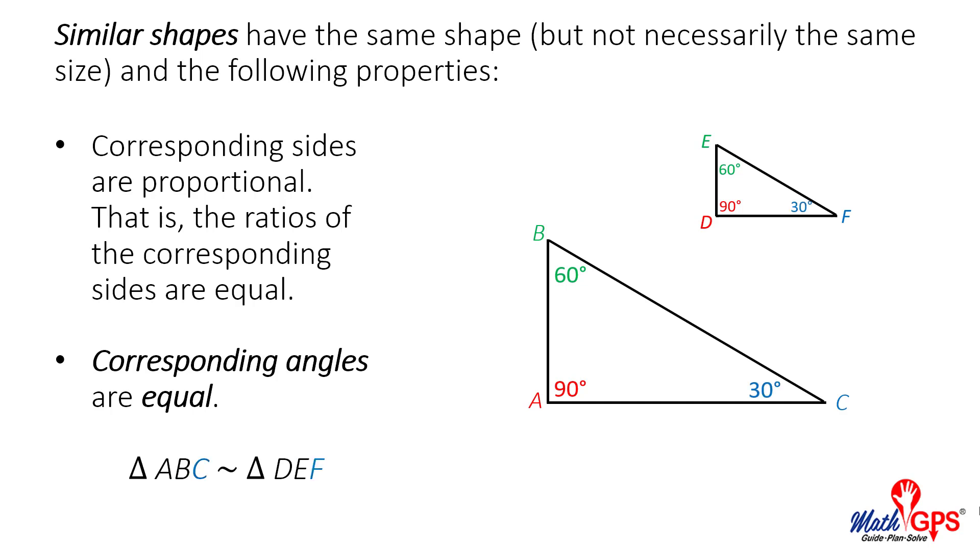And finally, angle C in the larger triangle corresponds to angle F in the smaller triangle. They each measure 30 degrees. Now, let's look at some problems.